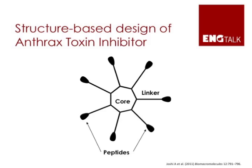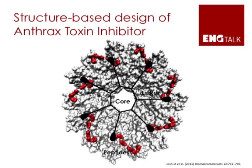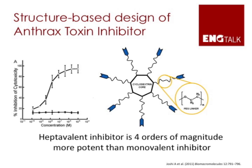Since the heptamer has seven-fold symmetry, to design a polyvalent molecule that bound to the heptamer, we started with a core that also has seven-fold symmetry and attached seven peptides to the core via linkers. If we designed the linker length to be just right, the molecule could fit snugly against its target, giving a very high affinity interaction. We chose a molecule called beta-cyclodextrin as the core and a biocompatible molecule called polyethylene glycol as the linker. When we got the linker length just right, our polyvalent inhibitor was more than 10,000-fold more potent than just the free peptide — not just seven times more potent, but actually four orders of magnitude more active.